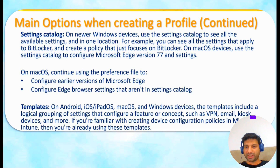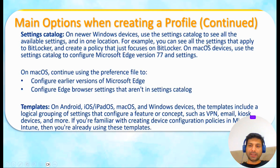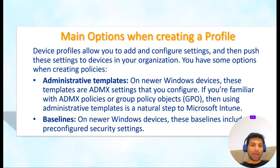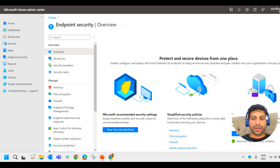For example, you can see all settings that apply to BitLocker and create a policy that just focuses on BitLocker. And we also have something called Templates. So when creating a profile, we have all these options: Administrative Templates, Security Baselines, Settings Catalog, and Templates.